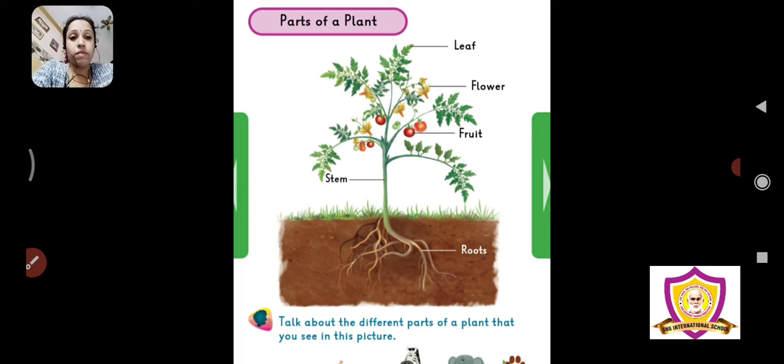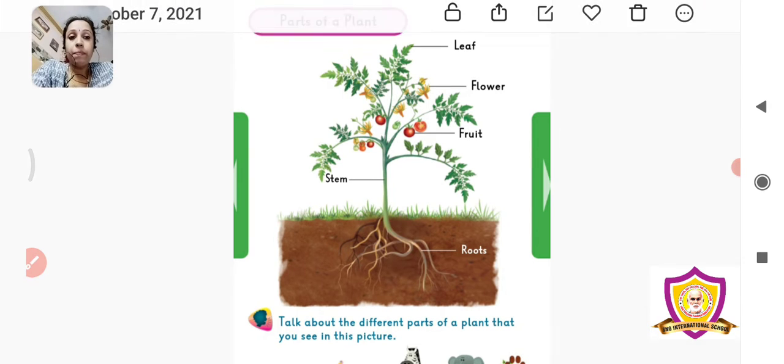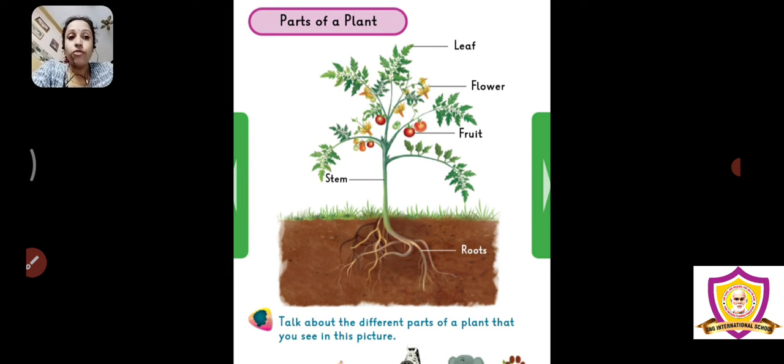What are the different parts of the plant? The different parts of the plants are root, stem, fruit, flower and leaf. These are the five different parts of the plant.